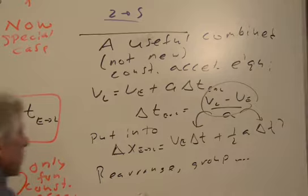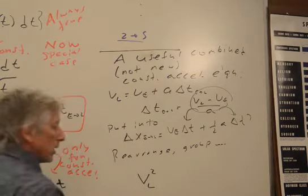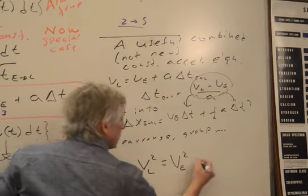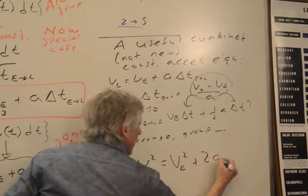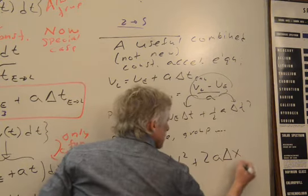That combination will give you this equation. V later squared is equal to V earlier squared plus 2A, not delta T, but delta X. Between which two states? Well,